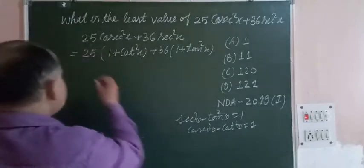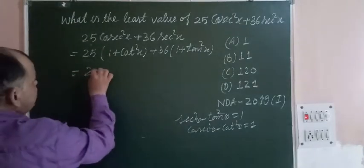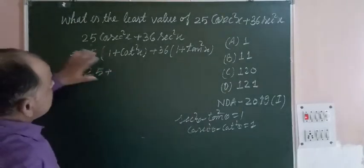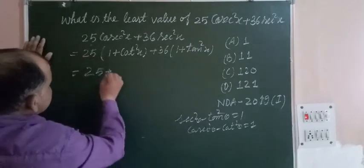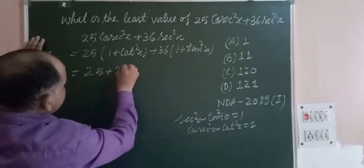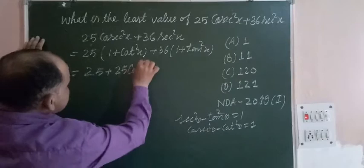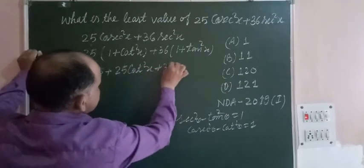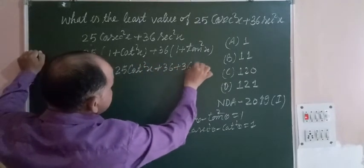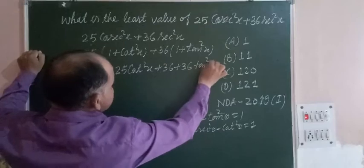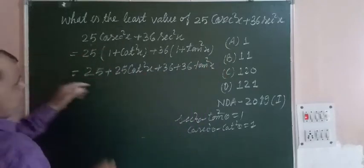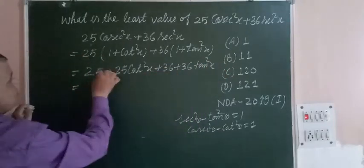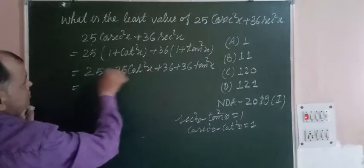Now multiply and add: we write 25 + 25 cot²x plus 36 + 36 tan²x. So 25 + 36 = 61. Now we write it as 25 cot²x + 36 tan²x.